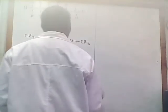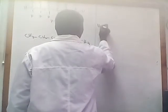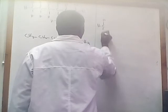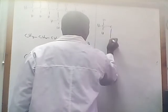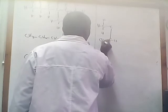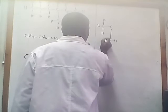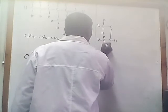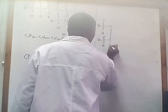Now I want to look at another one of these structures. I've got H, C, H, and a C — maybe I've got H3. Let me put it in the normal manner and draw it like this.